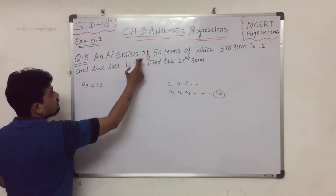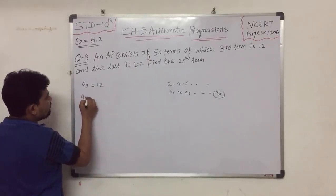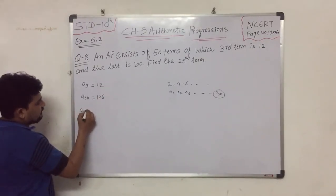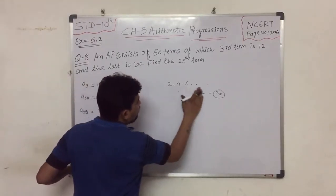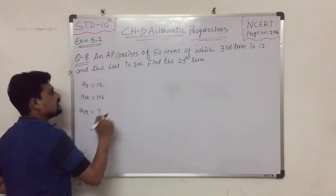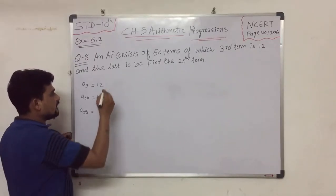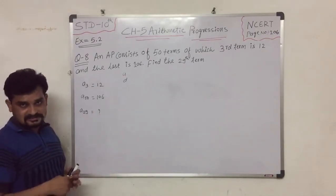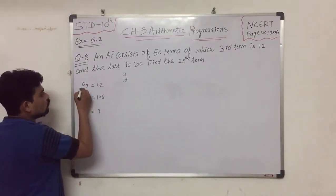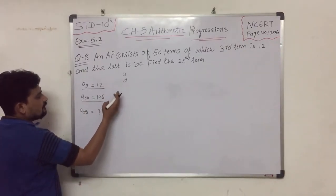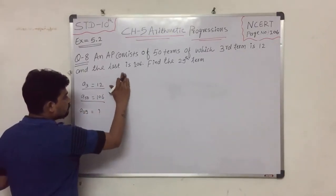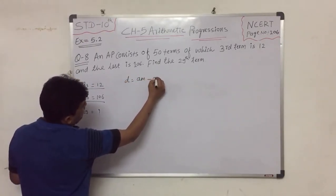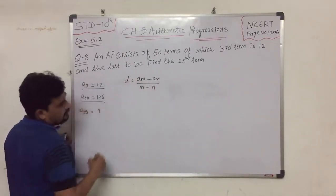To find out any term, we will first find A and D. If A and D are found, we can find any answer. So first we will find D. The formula for D is Am minus An upon m minus n.